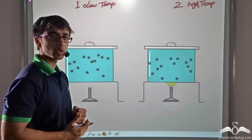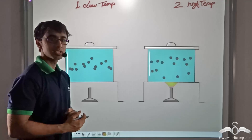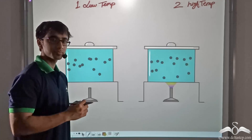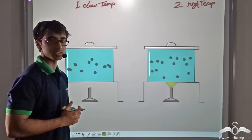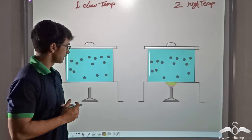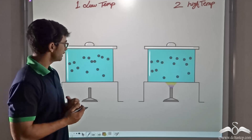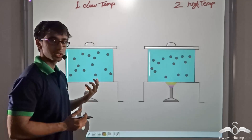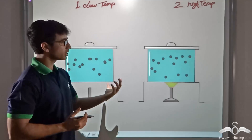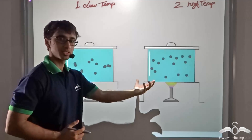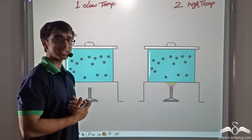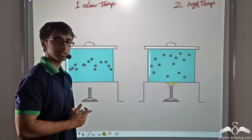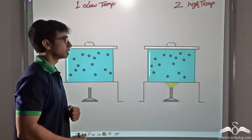Now do you recall what we studied about sound? Sound travels through a medium through molecular vibrations. Now if the molecules are moving about slowly, and if the molecules are moving about very fast, do you think it has an effect on the speed of sound? Let us find out.